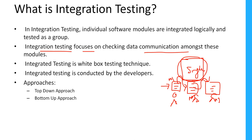Integration testing comes under the white box testing technique because we sometimes need to know the code. This testing is normally conducted by developers at the code level. There are two approaches — top-down and bottom-up — used to perform integration testing. Integration testing is also termed I&T (Integration and Testing), and is sometimes called string testing or thread testing.